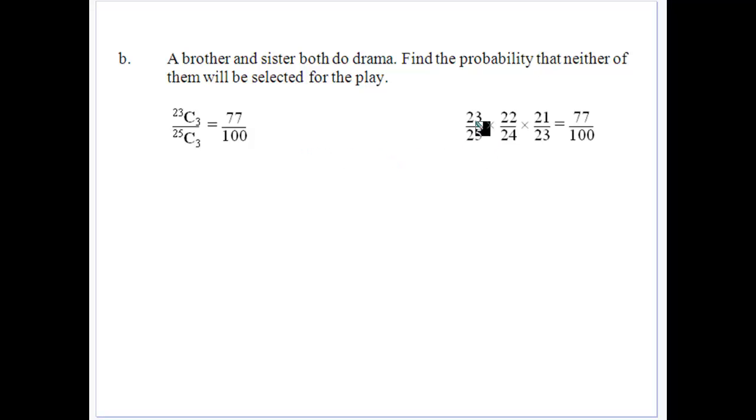That gives you 77 out of 100 when you put that into the calculator. Or again, you could look at it this way. Probability that they're not selected would be 23 out of 25 for the first, and then 22 out of 24 because there's no replacement, then 21 out of 23. Do that calculation gives us the 77 out of 100.